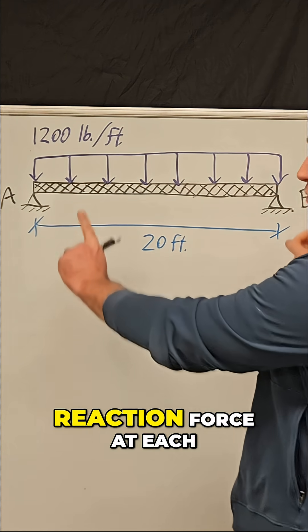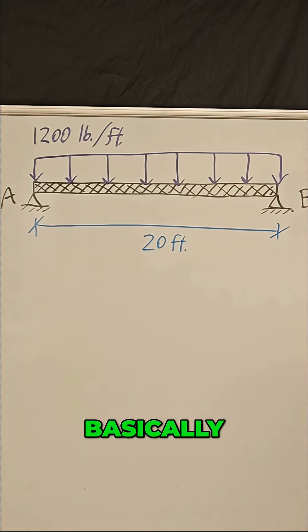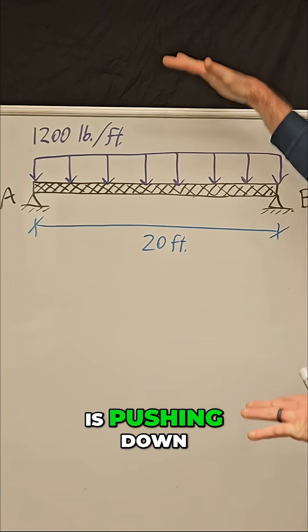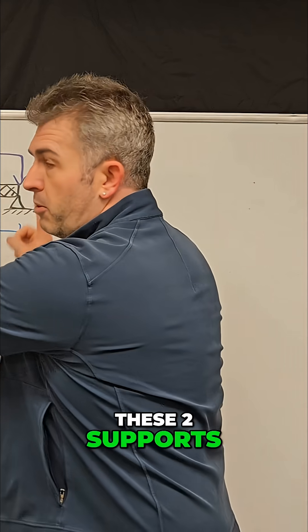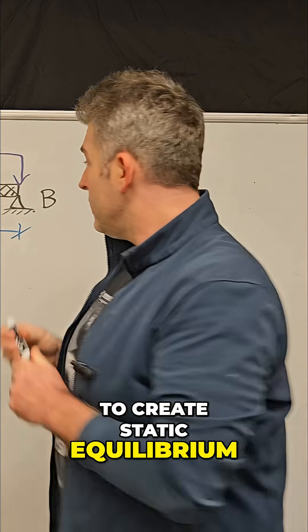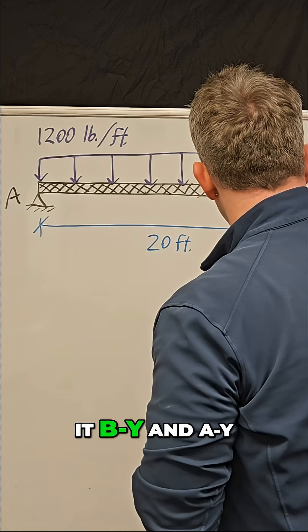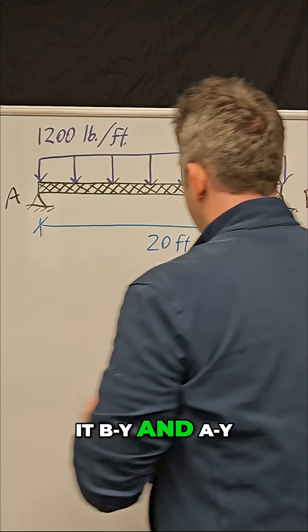So there's going to be a reaction force at each of those supports. Basically, when this load is pushing down on the beam, these two supports have to push up on the beam to create static equilibrium. So we're going to call this, let's call it B_Y and A_Y.